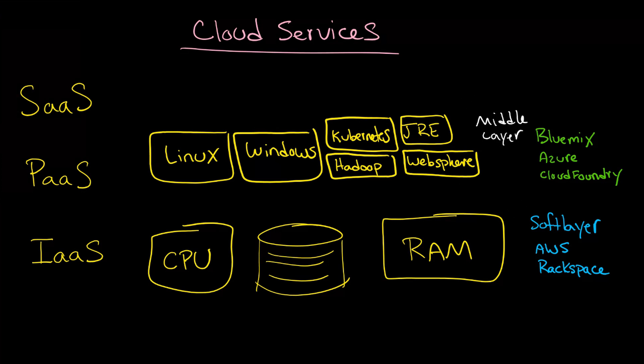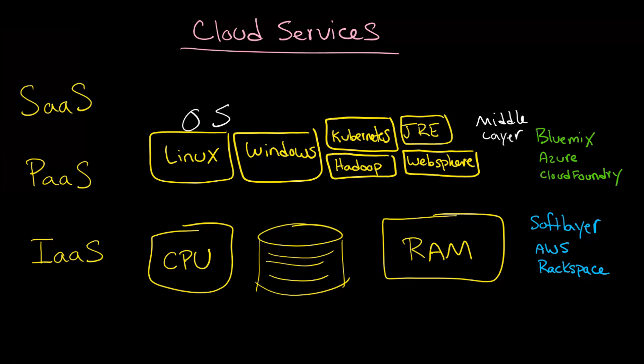Then we move on to platform as a service. Here you can see we have Linux, we have Windows — so basically you're talking about operating systems and anything in the middle layer, so to speak. This is infrastructure-centric software: Kubernetes, Hadoop, JRE, WebSphere.